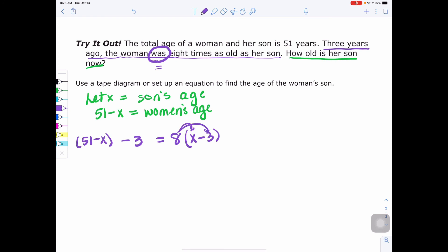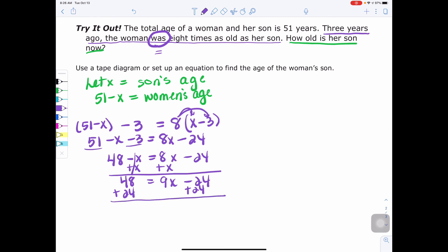So if I use distributive property, and technically the way I wrote this, you would be distributing a one, but it's 51 minus X minus 3 equals eight times X is 8X, and eight times negative 3 is negative 24. Then you would look for like terms. On the left-hand side, we have a 51 and a negative 3 that we can combine. So we get 48 minus X equals 8X minus 24. Next, we would have variables on both sides. So I'm going to get rid of the smaller one by adding X. Whatever I do to one side, I must do to the other. So I get 48 equals 9X minus 24. Then I would get rid of 24 by adding 24 to both sides. So I get 72 equals 9X. These are gone. And then I would divide by 9, and X is equal to 8.